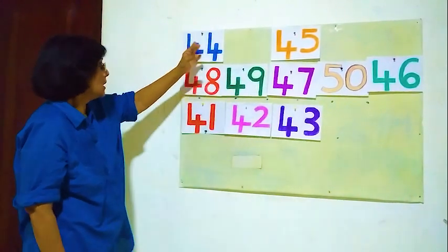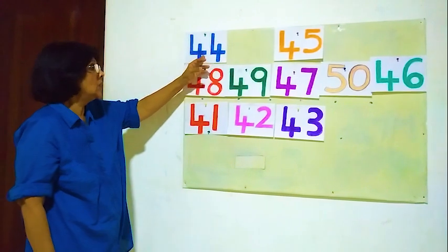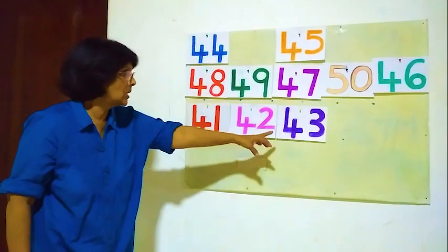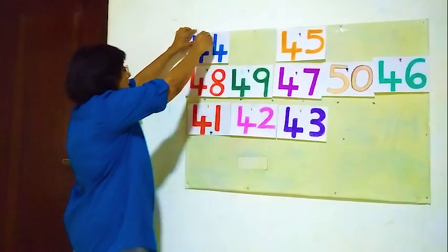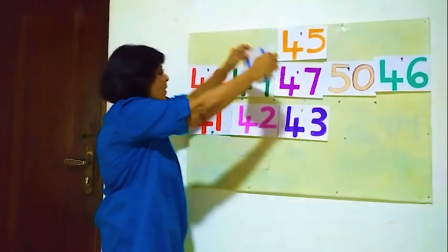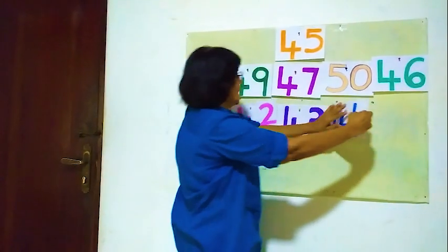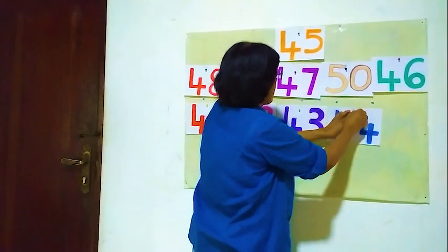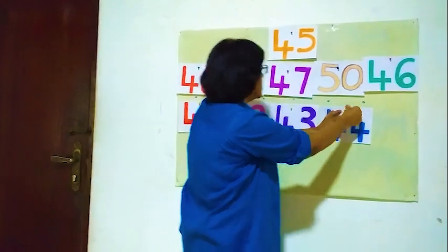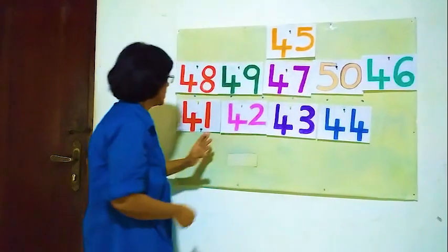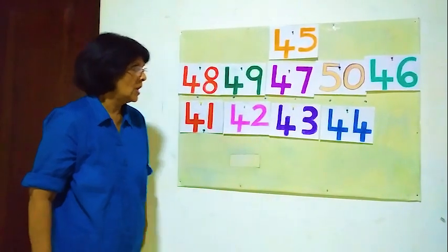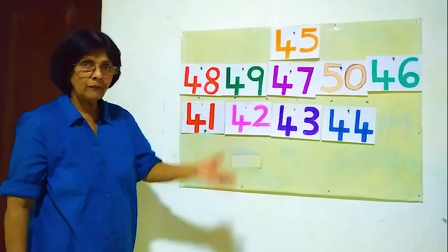After 43, the number 44 must come here. Now the order is correct: 41, 42, 43, 44.